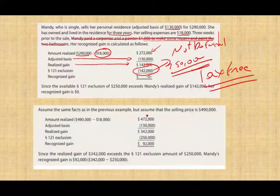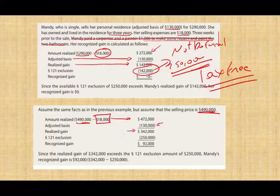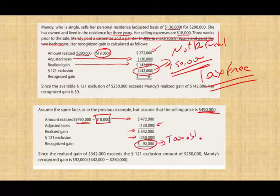Assume the same facts but the selling price was $490,000. Amount realized is $472,000 ($490,000 minus $18,000 selling expenses), minus the adjusted basis gives a realized gain of $342,000. The gain of $342,000 exceeds the $250,000 exclusion, so we can only exclude $250,000. The remaining $92,000 is taxable — it is recognized.